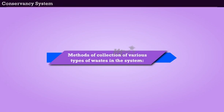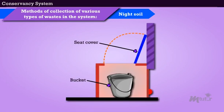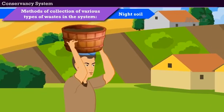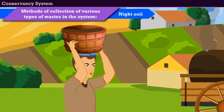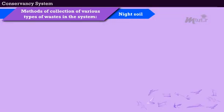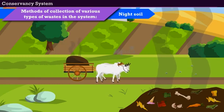Let us see the methods of collection of various types of wastes in the system. First, Night Soil: human excreta in latrines or privies is collected separately in pans or pails and carried on heads of sweepers to a central place, from where it is transported in bullock carts or motor vans to a place away from the town for its final disposal.